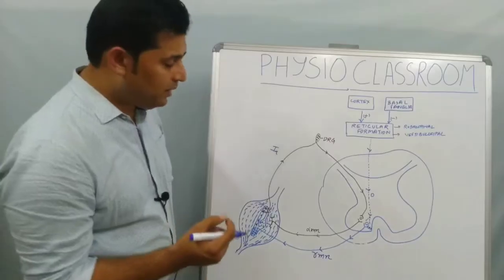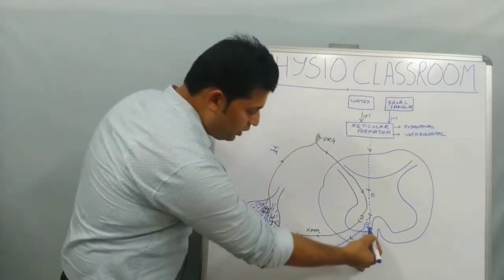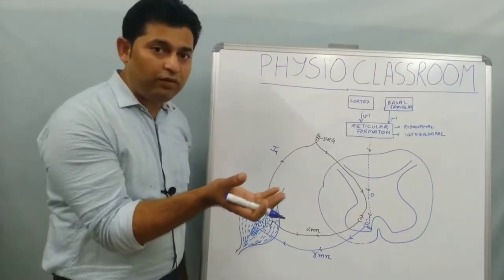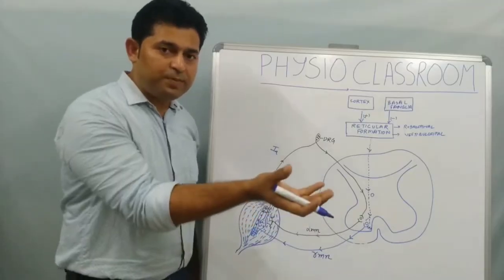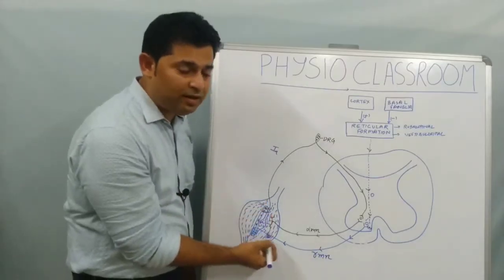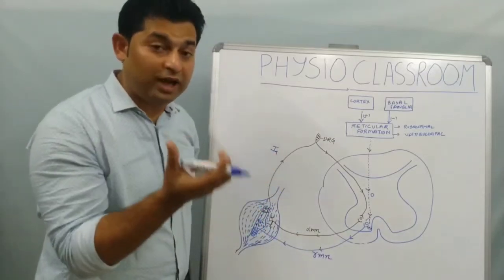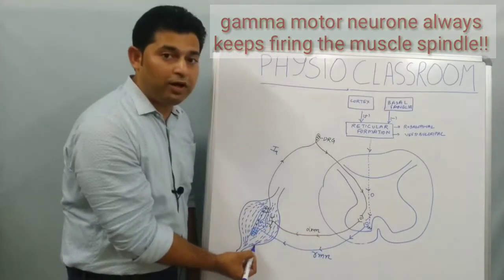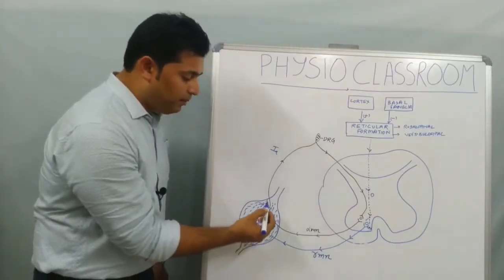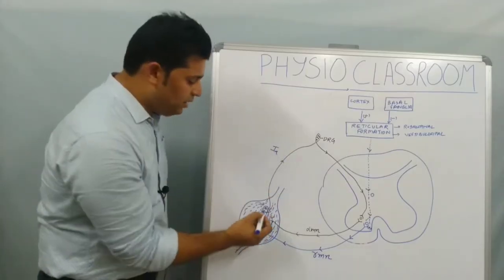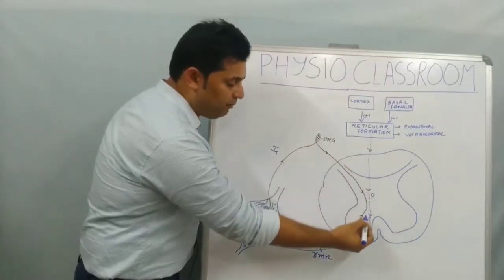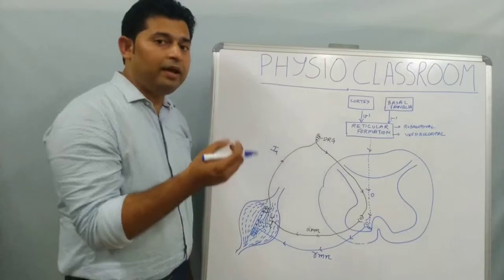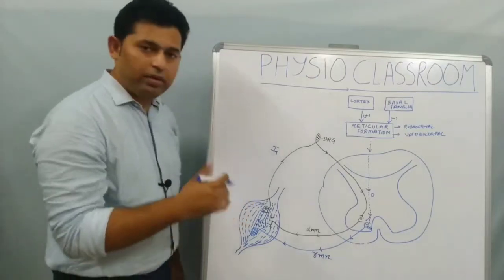There is a continuous steady state of discharge going along the gamma motor neuron to the muscle spindle, so the spindle always remains in a steady state of tension. There is continuous stretching and contraction of the spindle due to gamma motor neuron activity. This stimulus is picked up by the spindle, travels along the 1a fiber to the alpha motor neuron, which then stimulates the extrafusal fiber — so the extrafusal fiber also remains in a steady state of contraction.